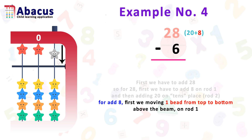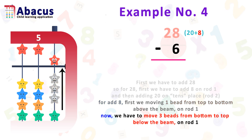For adding 8, first we remove the top bead of rod 1 to the bottom above the beam. Now, 3 still remain. On the bottom we have 4 beads, so we can easily add 3. I am going to move 3 beads from the bottom to the top below the beam on rod 1.